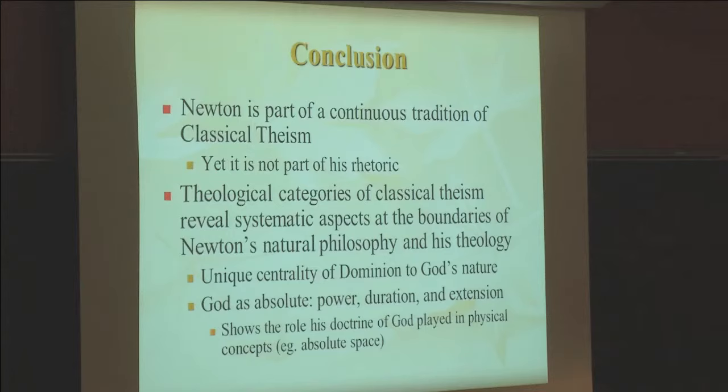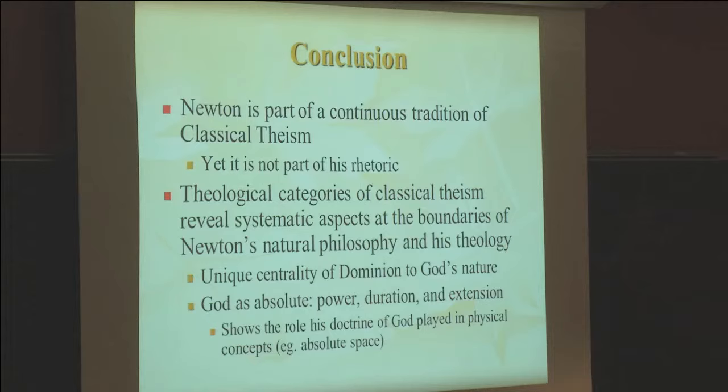To conclude, I presented Newton as part of a continuous tradition of classical theism, which can be seen when his specific theological statements are placed in their traditional contexts. Looking at the General Scholium through the theological categories of classical theism reveals systematic aspects at the boundaries of Newton's natural philosophy and theology. It makes explicit how central the concept of dominion is to God's nature, but more so it demonstrates the relative uniqueness of that position within the Christian theistic tradition. This method allows us to see how God's nature as supreme or absolute suffuses his attributes and bleeds over into Newton's conception of the natural world. I've attempted to look at the General Scholium not as a historian or philosopher, but as a theologian, considering Newton in light of a theological tradition and trying to cast an already well-developed picture of his theology in a new and systematic light. Thank you.